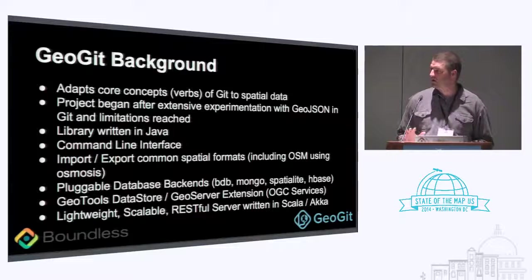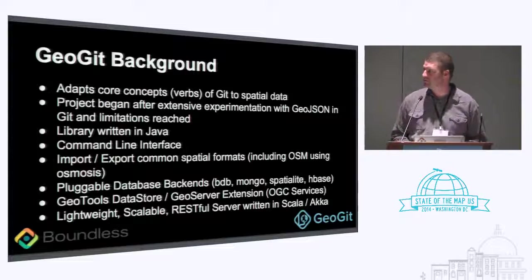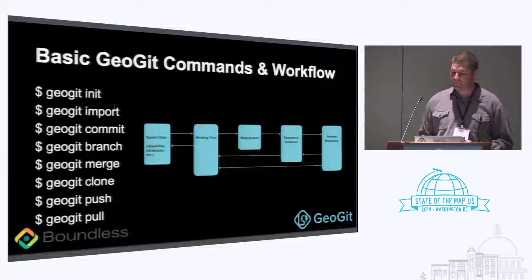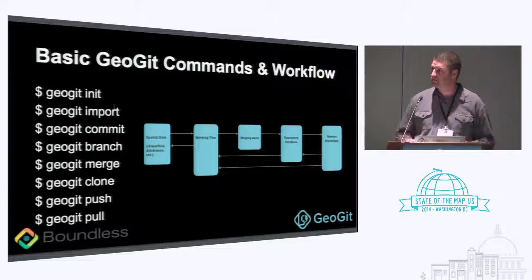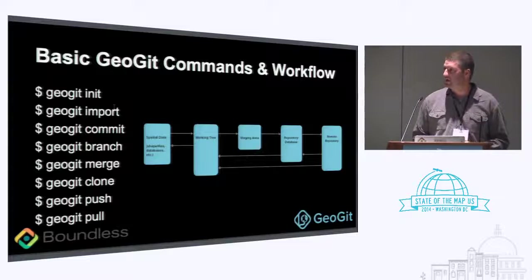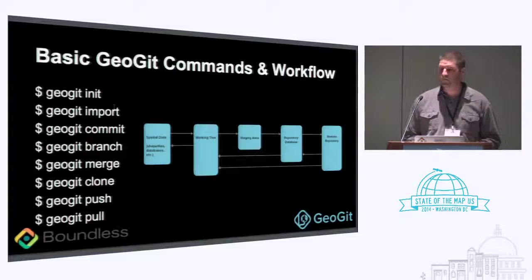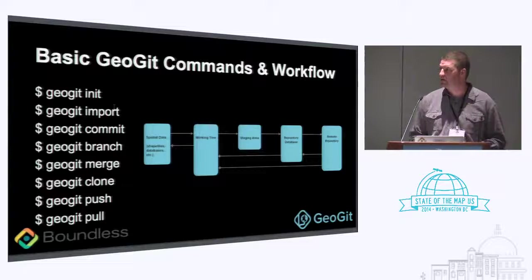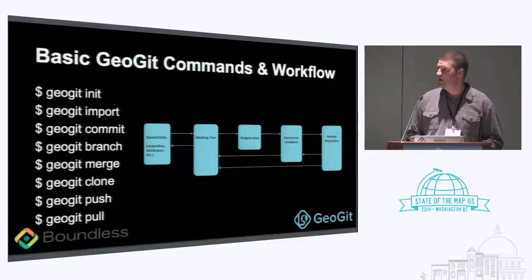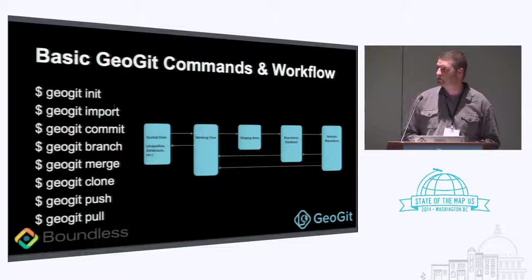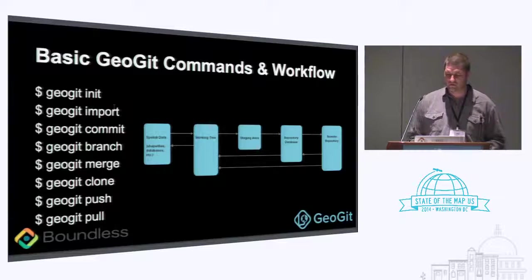I'm told Scala is a hipster-approved language, so that's kind of fun. Just basic GeoGit commands and workflow, much like Git — in a repository, import from various databases or shapefiles, OSM, commit, branch, merge, clone, push, pull — all the sort of things you're used to in Git.